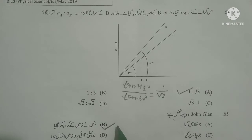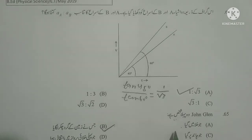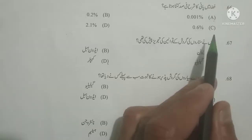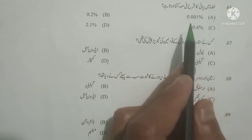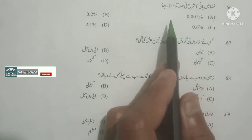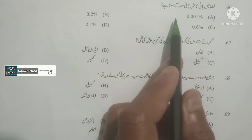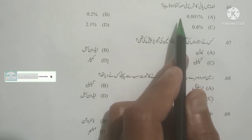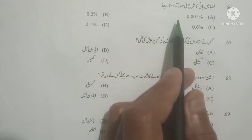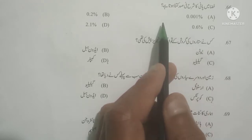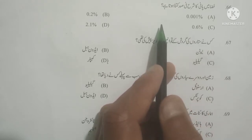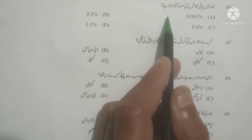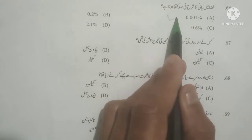What is the percentage of water in the atmosphere? As you know, the percentage of water at different levels is different. The percentage of water in the atmosphere is approximately 0.001%. Option A is correct.